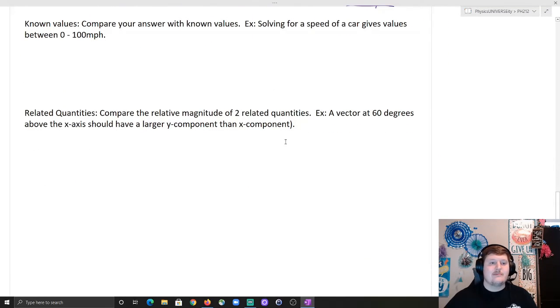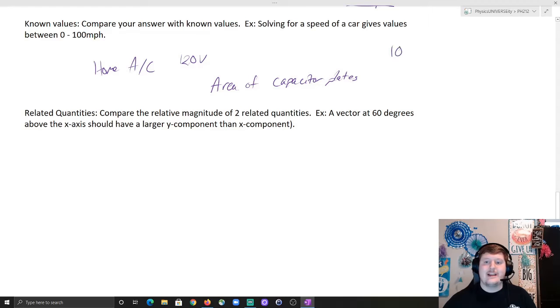Known values. Compare your answer with known values. Example solving for a speed of a car gives values between 0 and 100. This is an excellent question. One of the questions that I've seen recently is I have some sort of air conditioning unit, a home air conditioning unit, and I know that it has, say, 120 volts, and I know that it's a regular-sized air conditioning unit, and I'm looking for the area of the capacitor plates. Looking for the area of the capacitor plates of a regular home AC, and the answer was something like 10,000 square meters.